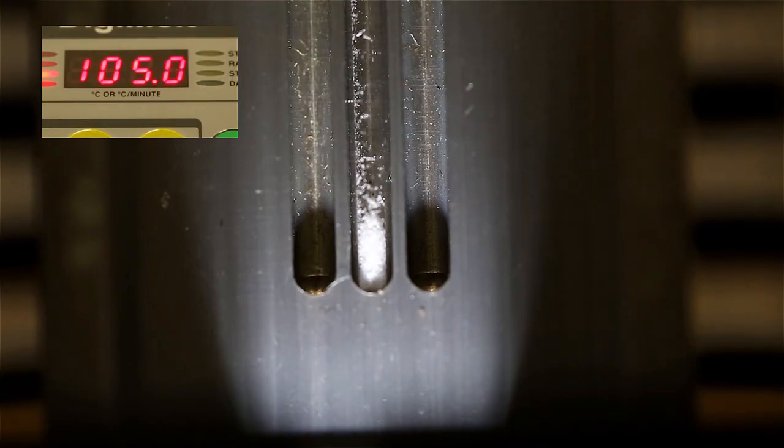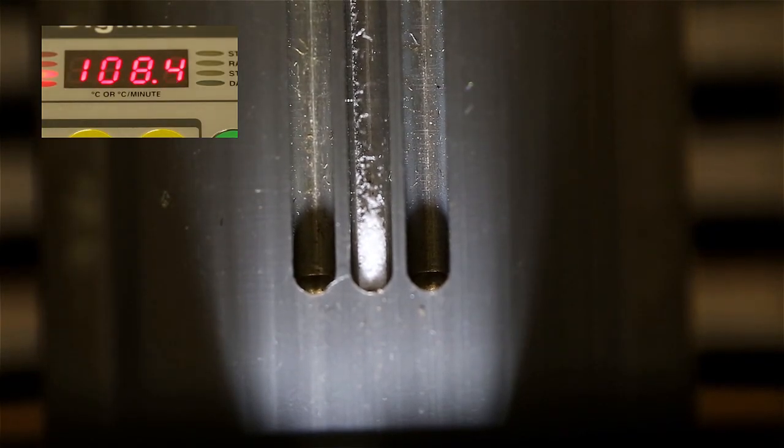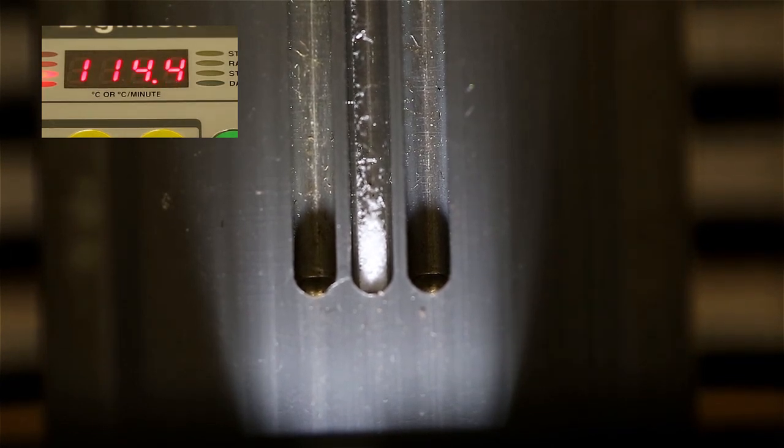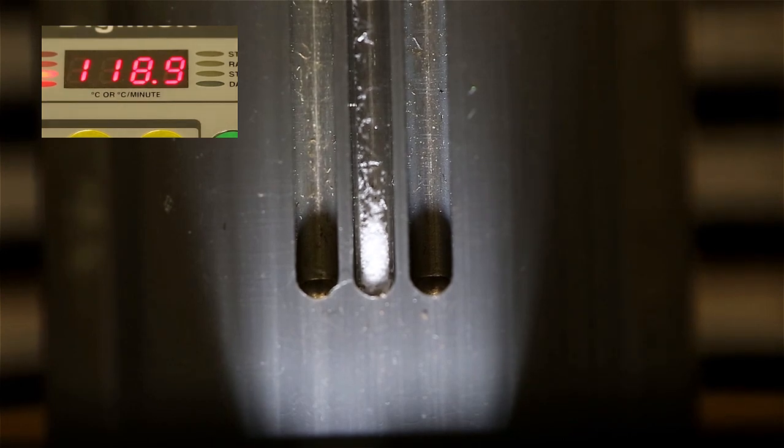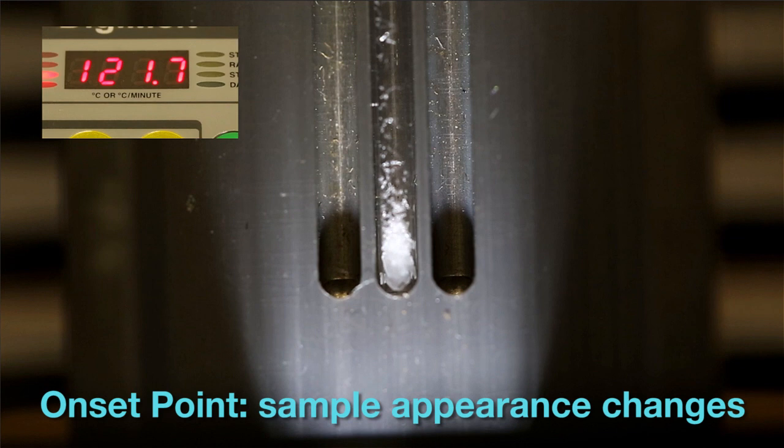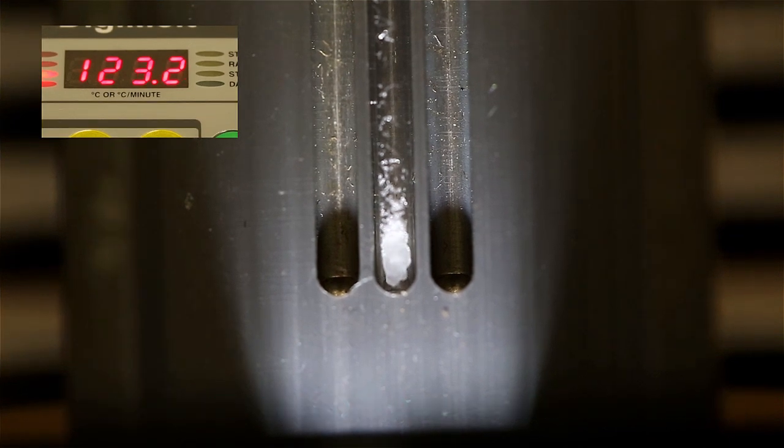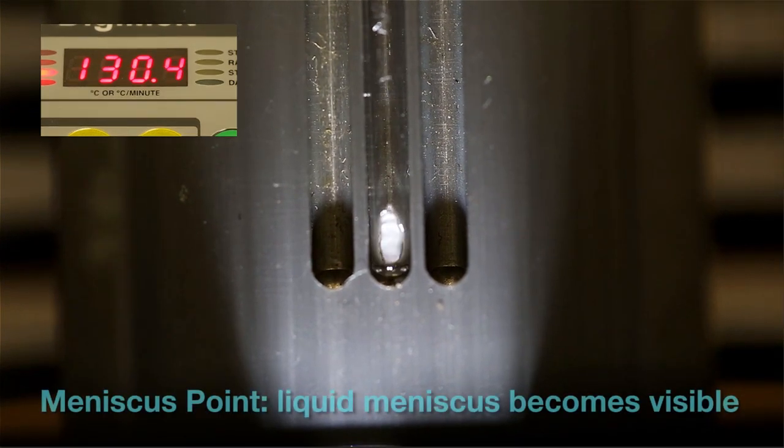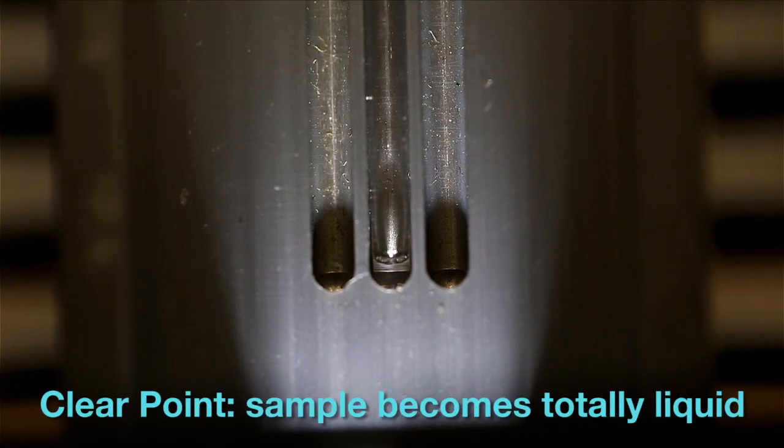There are three values associated with every melting point. First, the onset point, which is the point when the compound starts to melt. Secondly, the meniscus point, which is the point when there's equal volumes of solid and liquid. Lastly, the clear point is the moment that all solid converts to liquid form.